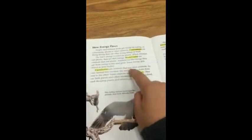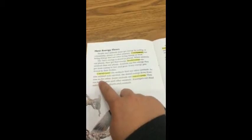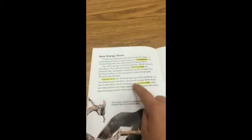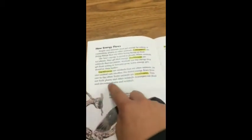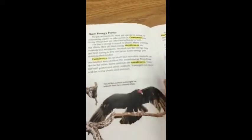Carnivores are animals that eat other animals. As one animal eats another, the stored energy flows from the one to the other. Some animals are omnivores. They eat both plants and other animals.